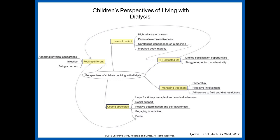This slide on the perspective of children living with dialysis shows another burden they're dealing with as they move from pediatric to adult care. In this survey, children felt a loss of control over many aspects of their life, reliance on caregivers, parental overprotectiveness, impaired body image, dependence on a dialysis machine, a restricted life, struggles performing academically, fluid and diet restrictions, and feeling different from their peers with an abnormal physical appearance.